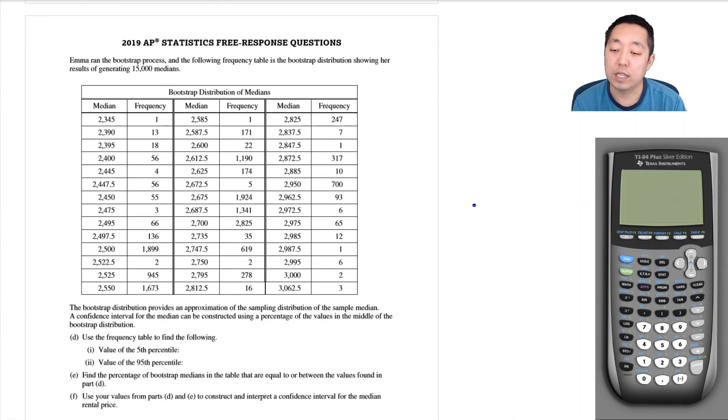The bootstrap distribution provides an approximate sampling distribution of the median. A confidence interval for the median can be constructed using the percentage of values in the middle of the bootstrap distribution. Use the frequency table to find the value of the fifth percentile. The fifth percentile would be five percent of 15,000.